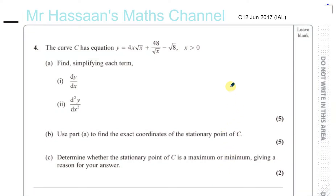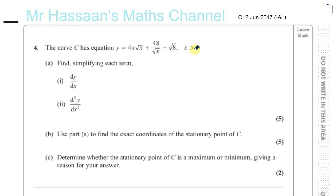I'm going to continue with C12, June 2017, IAL paper. I was requested to do a whole paper and that's what I'm doing. In question number 4, we're asked to find dy/dx and d²y/dx² for the curve which has an equation y equals 4x times root x plus 48 over root x minus root 8, where x must be greater than 0.